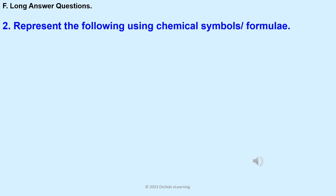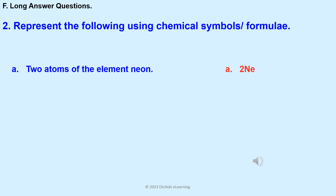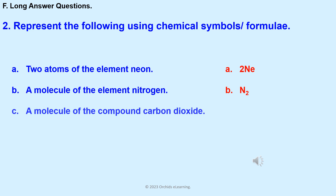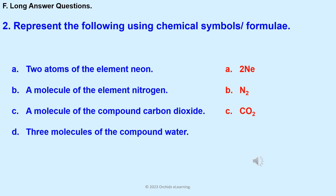Represent the following using chemical symbols and formulae: 2 atoms of the element neon — 2Ne. A molecule of the element nitrogen — N2. A molecule of the compound carbon dioxide — CO2. 3 molecules of the compound water — 3H2O. 4 molecules of magnesium oxide — 4MgO.